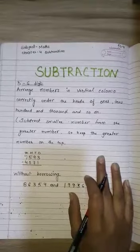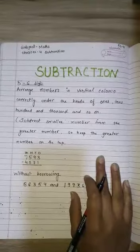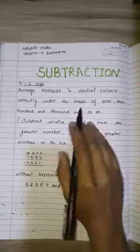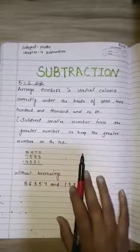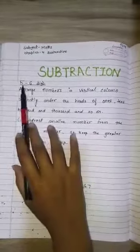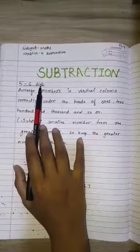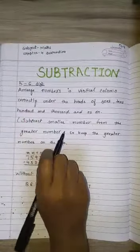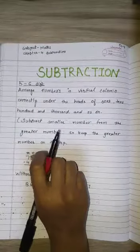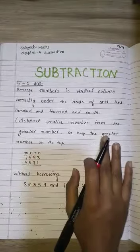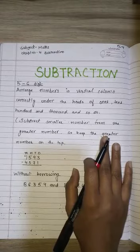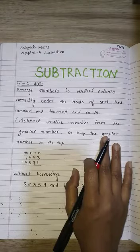Students, today we have to start a new chapter — Chapter Number Four: Subtraction — in our math class. Here we have to learn about five and six digit numbers. In the previous class we learned about three and four digit numbers, so here we are starting with five and six digit numbers.